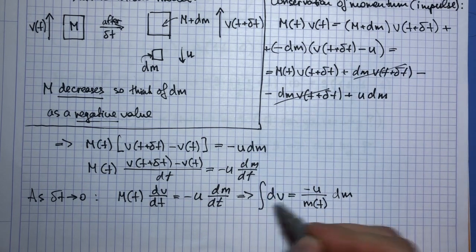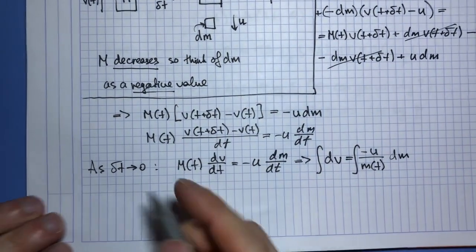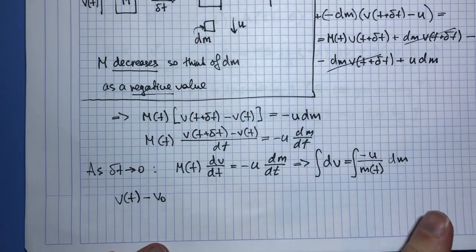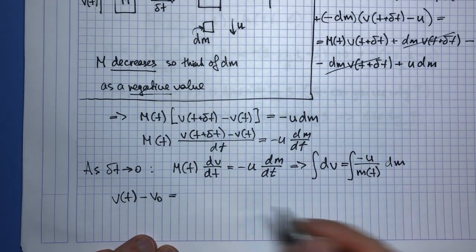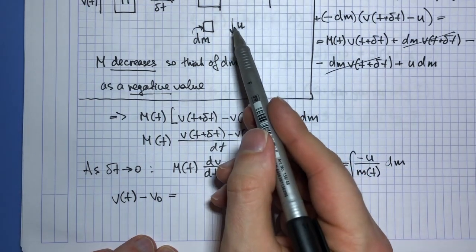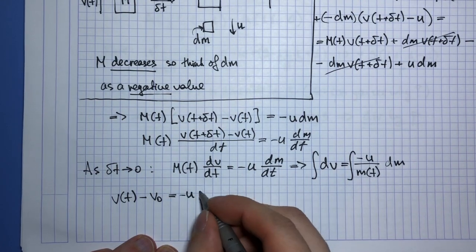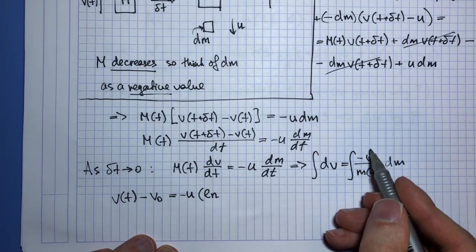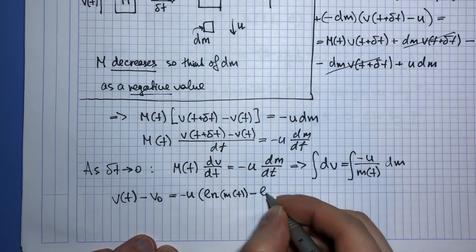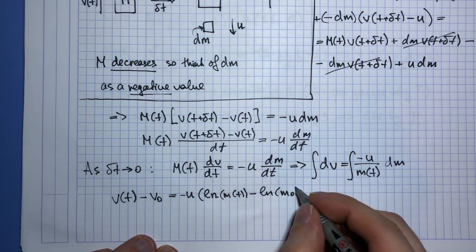So then if I integrate, on the left hand side I get v(t) minus my initial speed that I call v0, equals minus u of a logarithm. And the upper bound is my current mass m(t) minus my initial mass of the rocket.